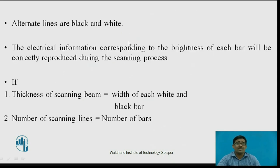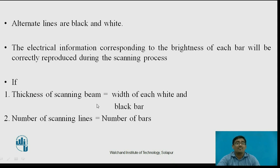Alternate lines are black and white. The electrical information corresponding to the brightness of each bar will be correctly reproduced during the scanning process if two conditions are satisfied: first, the thickness of the scanning beam is equal to the width of each white and black bar; and second, the number of scanning lines is equal to the number of bars.